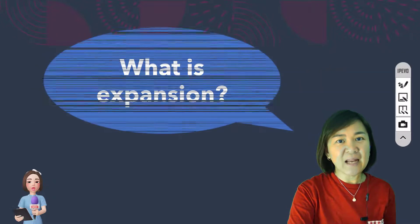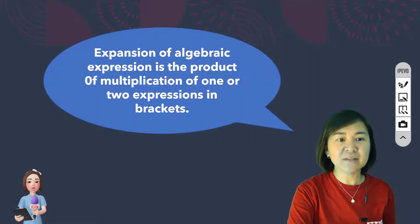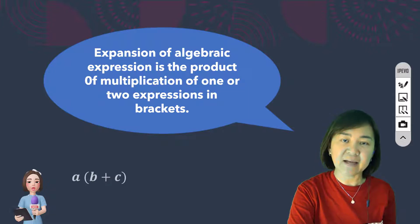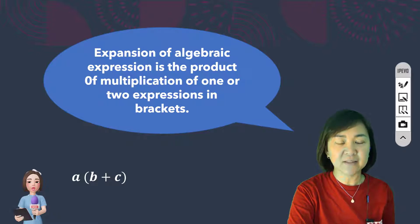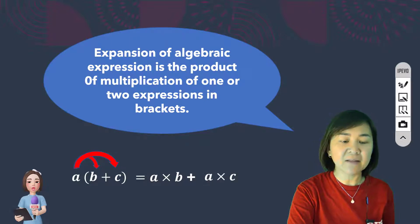Before we proceed to our lesson today, let's flash back - what is the definition of expansions? Expansion of algebraic expressions is the product of multiplications of one or two expressions in brackets. For example, when A multiplied by bracket B plus C, we get the expansion using the arrow method: A times B plus A times C. So the answer after expanding will be AB plus AC.